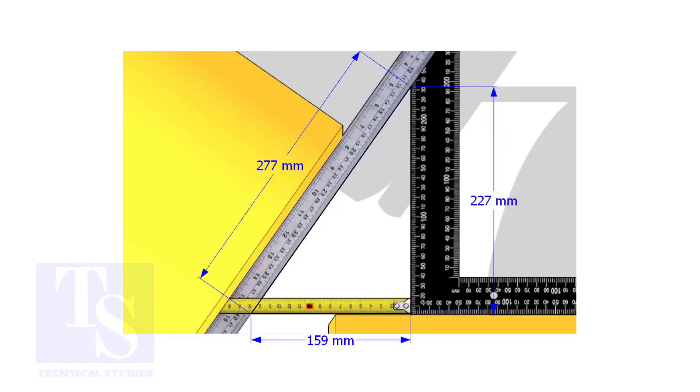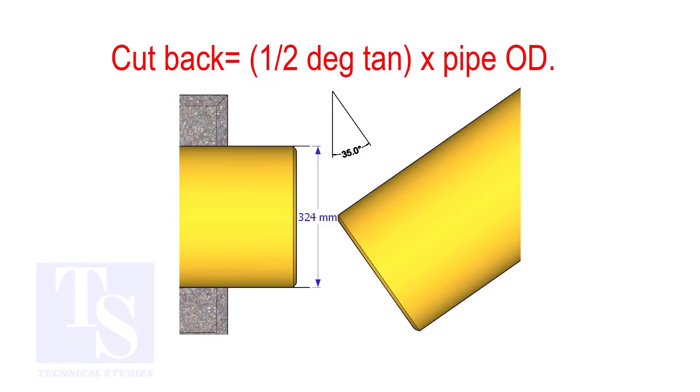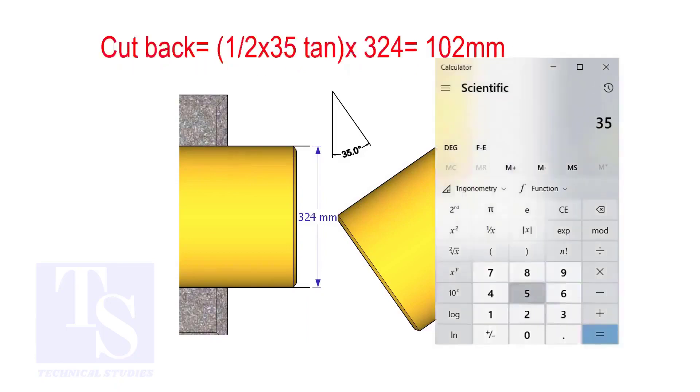How to calculate the cutback of a single cut miter. When it is a single cut, the cutback is half degree tan, multiplied by the OD of the pipe. The answer is 102 millimeters.